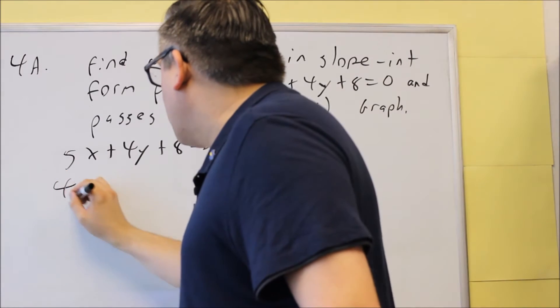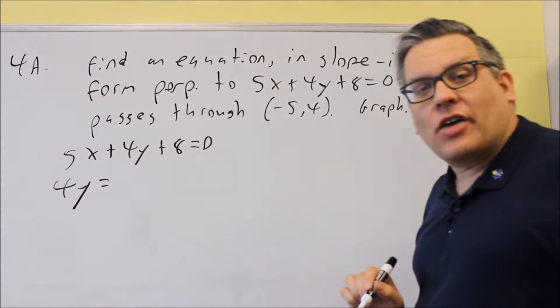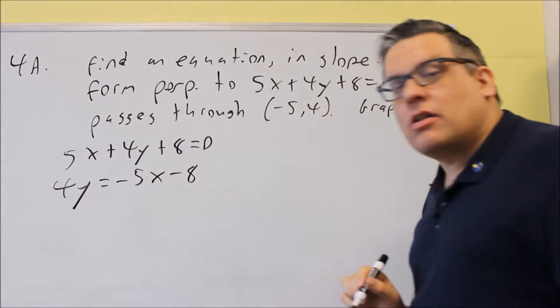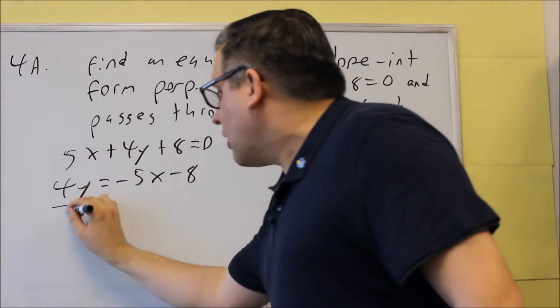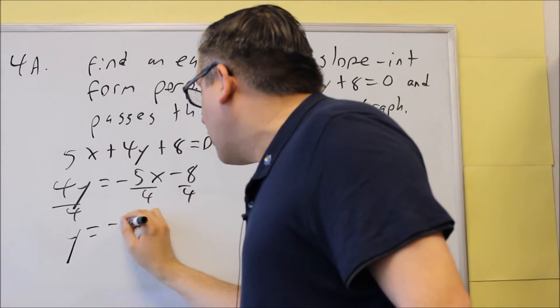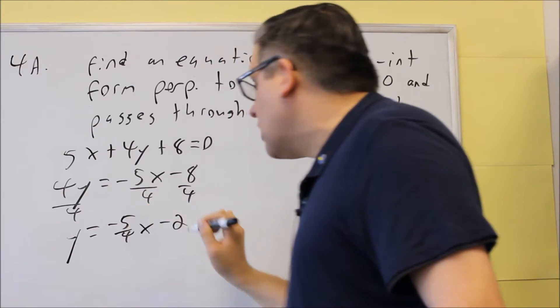We're going to leave the 4y over there, subtract the 5x and the 8, so we get negative 5x minus 8. We're going to divide everything by 4, just like this. So y equals negative 5 fourths x and then minus 2.